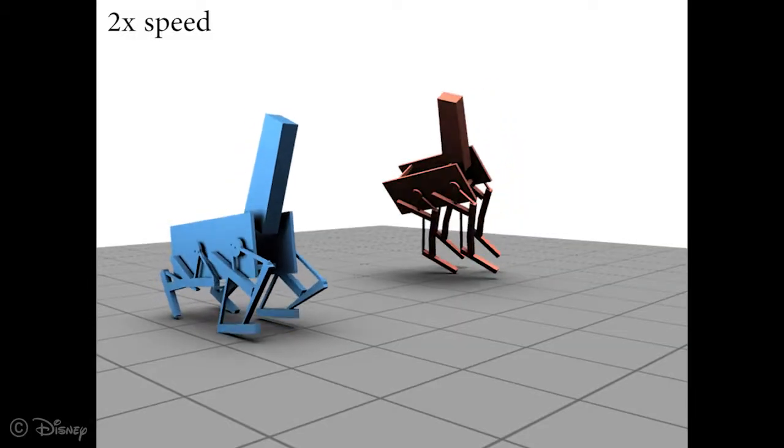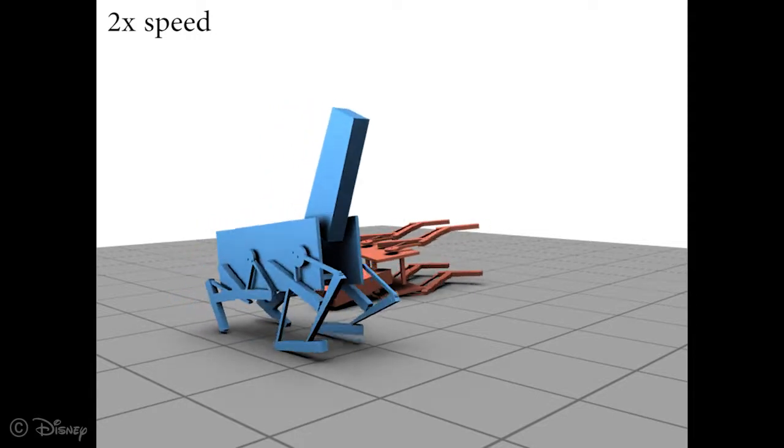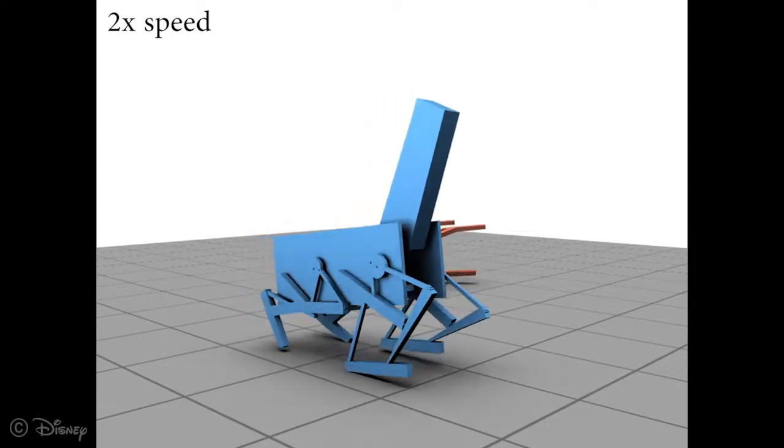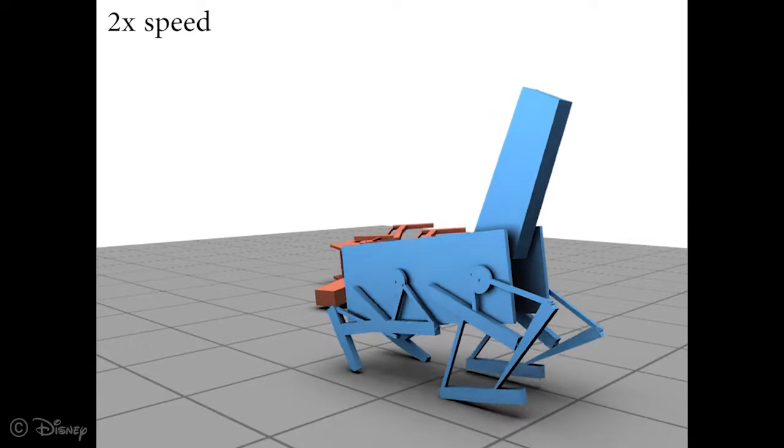Our final example shows how the optimization adapts to an asymmetric design between the front and back with a shifted center of mass. The initial design falls over and hits the head, while our optimized result balances the heavy neck.